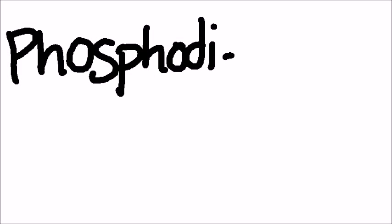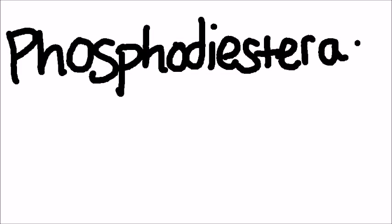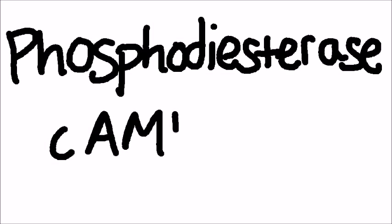When the fight-or-flight response is over, the body wants to return to homeostasis. An enzyme known as phosphodiesterase—yes, I had to practice how to spell that—stops or decreases the amount of cAMP, which decreases the heart rate, allowing for homeostasis to return.